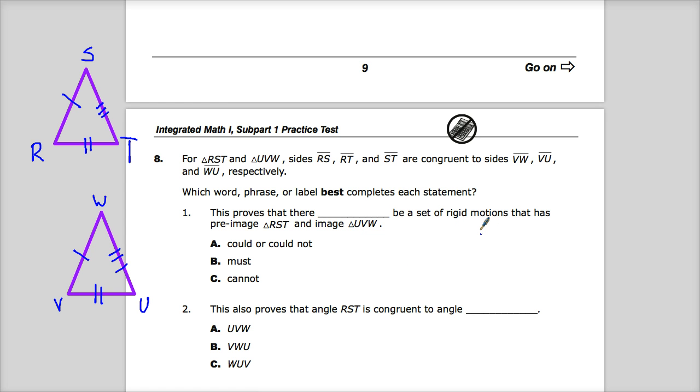So when they say that there's a rigid motion, it means the type of translation that would lead to congruence. They'd be in the same, all the parts would match up in the way that they're supposed to. So what we're looking for is to see if we can prove congruence.